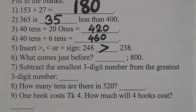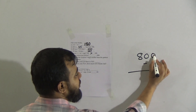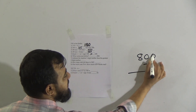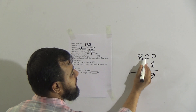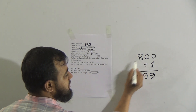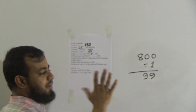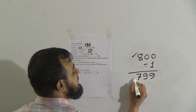Question number 6: what comes just before blank, where the number after the blank is 800. Before a number means subtract 1. Subtract 1 from 800: ones digit is 0, borrow from tens — but tens is also 0, so borrow from hundreds. 8 becomes 7, the 1 borrowed becomes 10 in tens, then borrow again for ones: 10 minus 1 is 9 in ones, 9 in tens. So the number before 800 is 799.